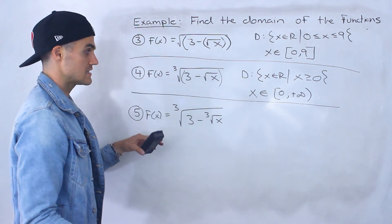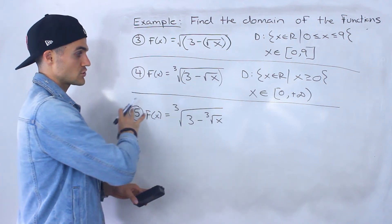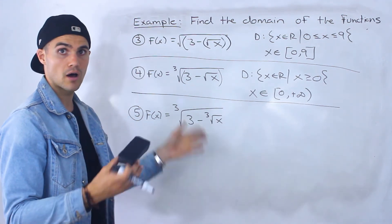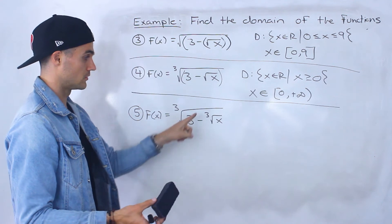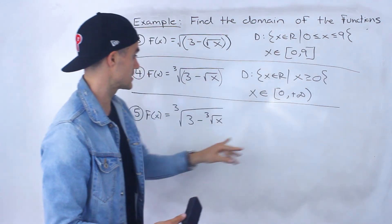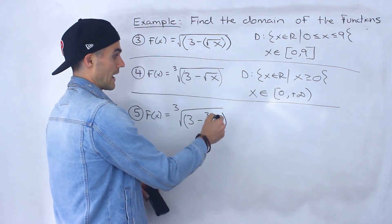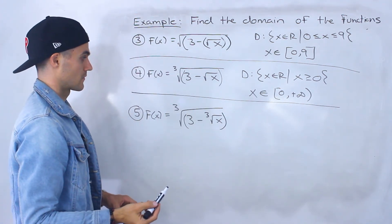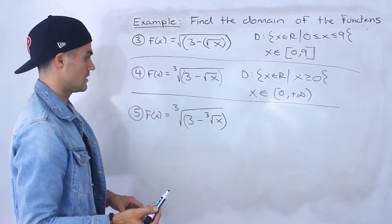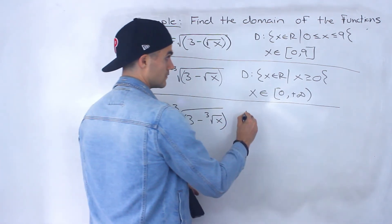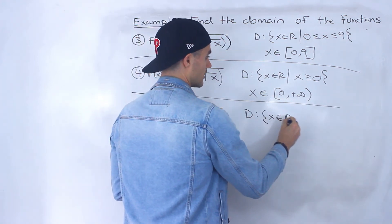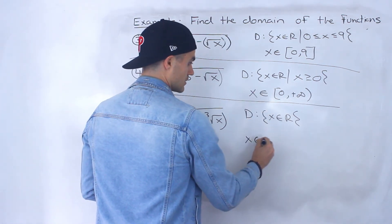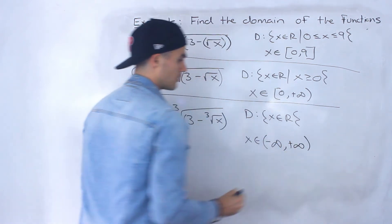Finally, number five is the least restrictive — there's no restriction at all, because we have a third root on the outside and a third root on the inside. X can be positive, negative, or zero because we can take the third root of any number. So the restriction from having a square root of x is gone, and the restriction that x had to be less than or equal to nine is also gone. The domain for this function is simply x ∈ ℝ, or in interval notation, from negative infinity to positive infinity.